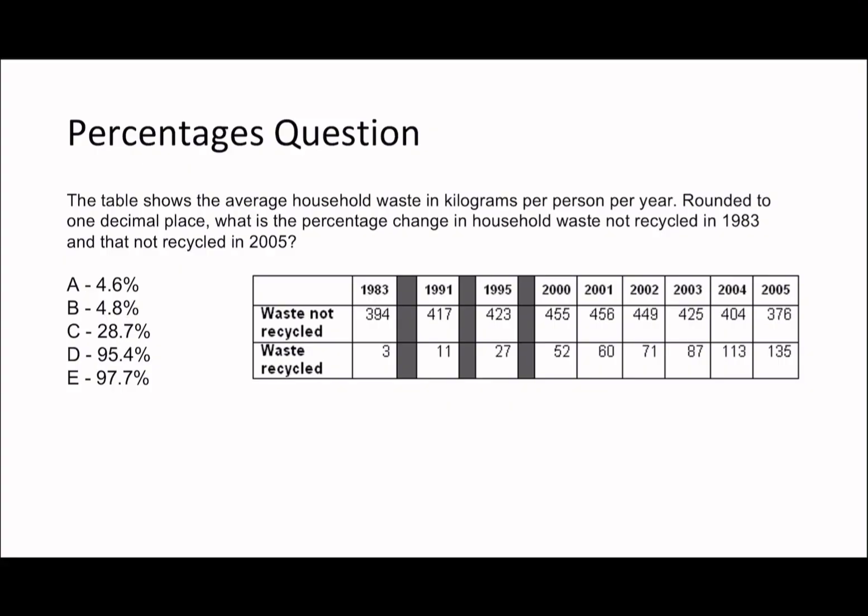Okay, just a couple of things to think about. So in that case, let's go on to our very first question. So if you guys would like to take a pause, see if you can have a go at this question and then I'll talk you through some of the answers here. So the table shows the average household wasting kilograms per person per year rounded to 1dp. What is the percentage change in household waste not recycled in 1983 to that not recycled in 2005?